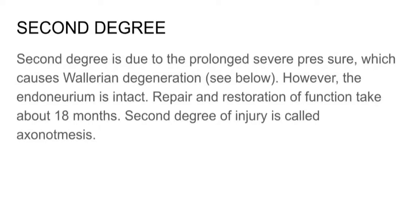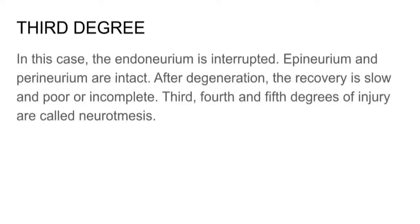In second degree injury, repair and restoration of functions takes about 18 months. Second degree of injury is called axonotmesis. Third degree injury involves interruption of the endoneurium while the perineurium and epineurium are intact. After degeneration, the recovery is slow, poor, or incomplete.